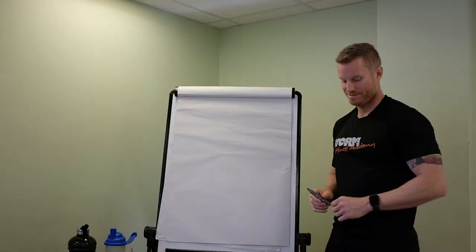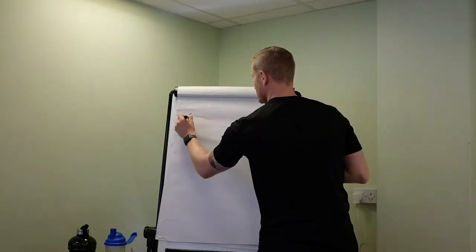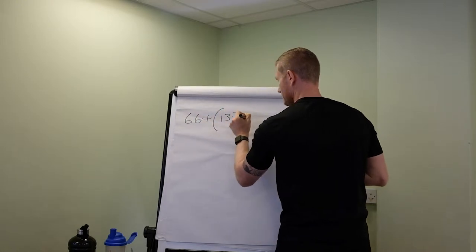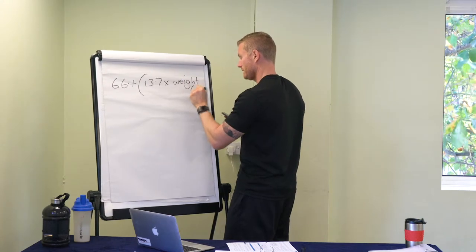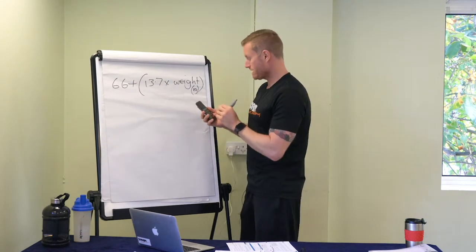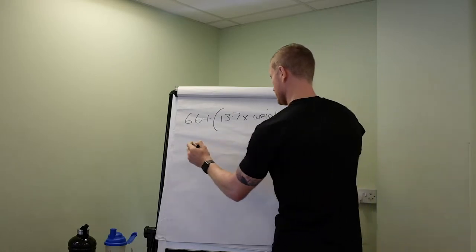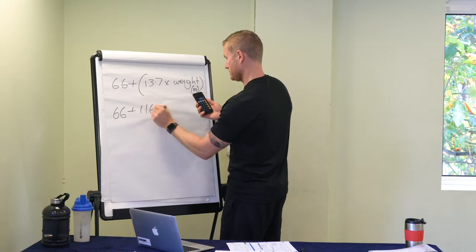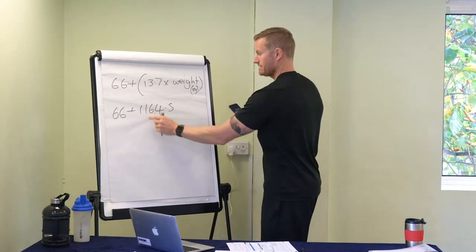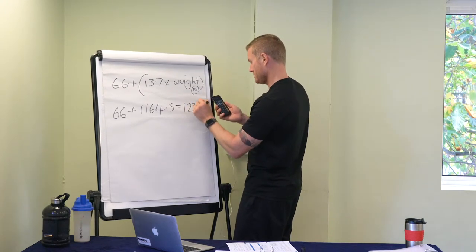What I've got here is an equation for men and an equation for women. It's a very long-winded equation, and you have to break it down to begin. So let's use mine. First, your basal metabolic rate equals 66 plus 13.7 times your weight in kilograms. My weight in kilos is currently 85, so 85 times 13.7 equals 1164.5. Adding the 66 gives us 1230.5.